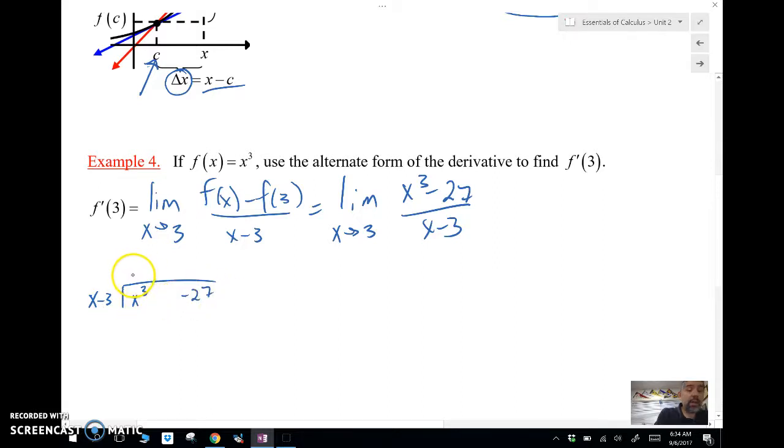We're going to have x squared. That's x cubed minus 3x squared. Then bring down the 0x. Then we're going to have plus 3x, 3x squared minus 9x, minus 27. And then that's going to be plus 9.